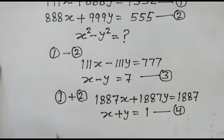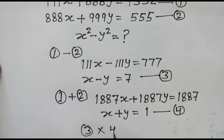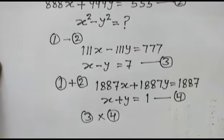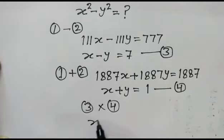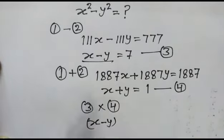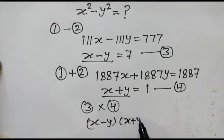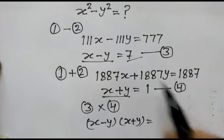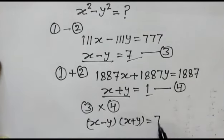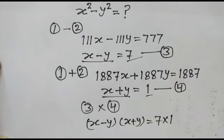Now, we multiply equation third and fourth. We get x minus y times x plus y equals 7 times 1.